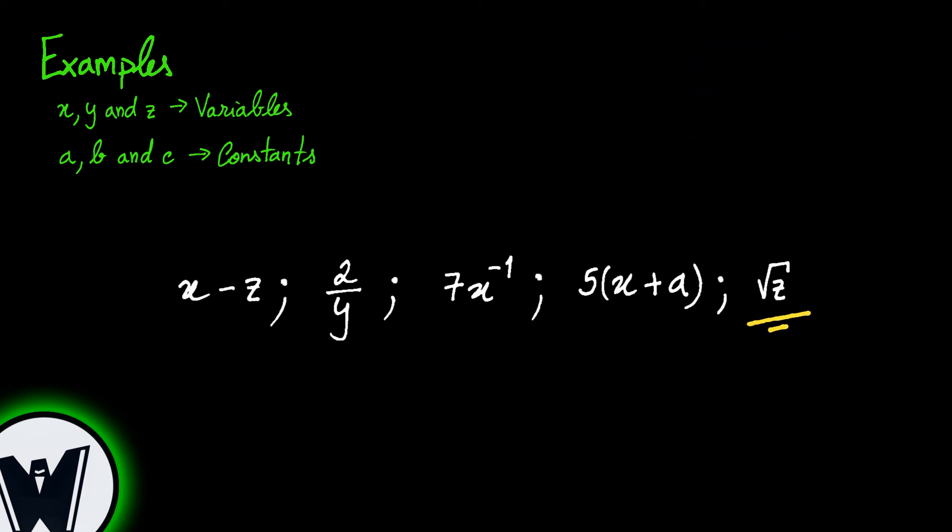The last example, the square root of the variable z, also represents a non-monomial. This can be seen from one of the radical's properties, that this is the same as having z to the power of 1 divided by 2. And 1 divided by 2, which is equal to 0.5, isn't a natural number.